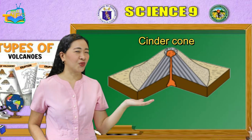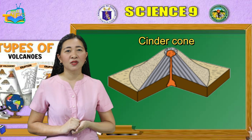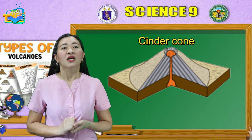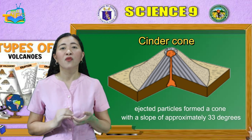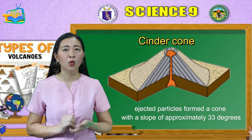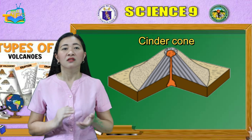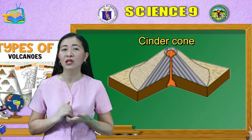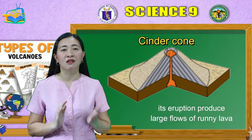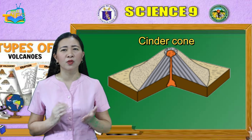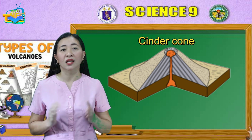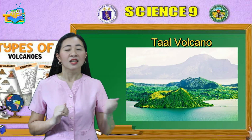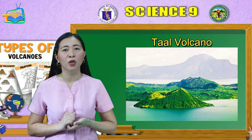Second is the cinder cone. Cinder cones are volcanoes formed from loose rock fragments ejected from a central vent. The ejected particles land near the vent, forming a cone with a slope of approximately 33 degrees. The lava flows from a single vent, and once the bulk of gases have been released, the eruption begins to produce large flows of runny lava. These flows typically emerge from fissures at the base of the volcano or breaches in the crater wall. Taal in Batangas is an example of a cinder cone volcano.